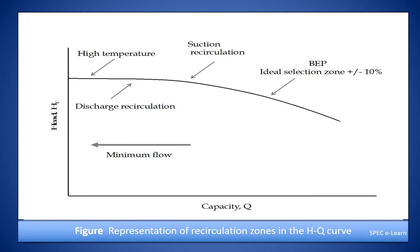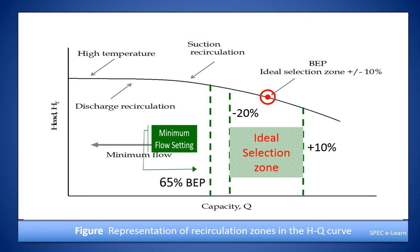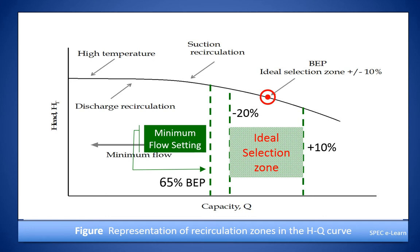This figure illustrates the effect of minimum flow on pump performance. The desired operating range is 80–100% of BEP flow — that is the ideal selection zone. It is not desirable to select a pump with a duty point less than 65% of BEP flow. Three phenomena occur as flow reduces progressively below 65%: suction recirculation, discharge recirculation, and high temperature of the pumped fluid — all having negative impact on pump operation and stability.